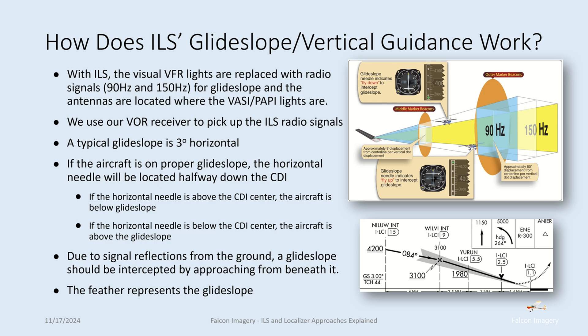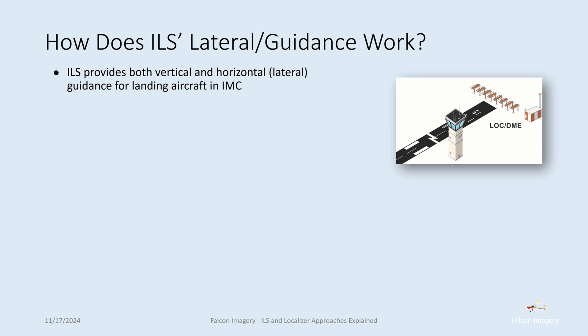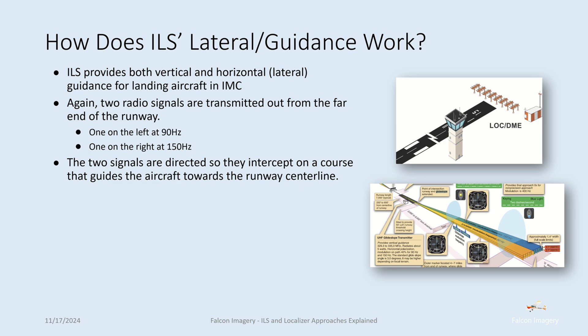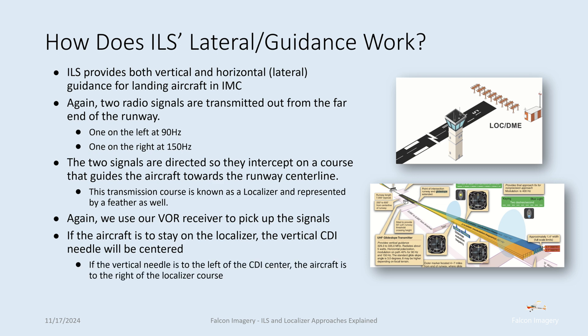Looking at the profile view of an instrument approach procedure, the feather on the right represents the glide slope. ILS provides both vertical and lateral guidance for landing in IMC. Two radio signals are transmitted from the far end of the runway — one on the left at 90 Hz and one on the right at 150 Hz — directed to intercept on a course guiding the aircraft toward the runway centerline, known as the localizer. If the aircraft is on the localizer, the vertical CDI needle will be centered. If it's to the left, the aircraft is right of course; if to the right, the aircraft is left of course.